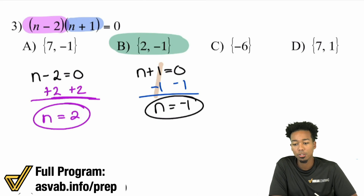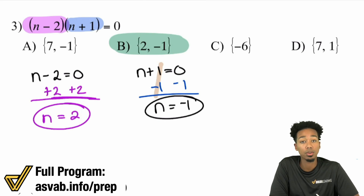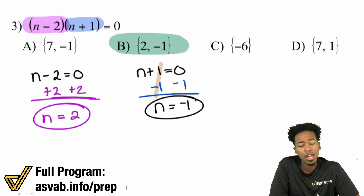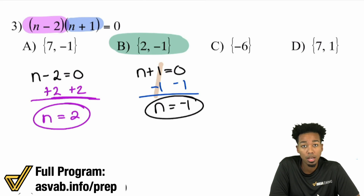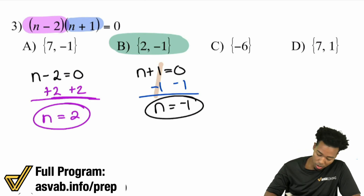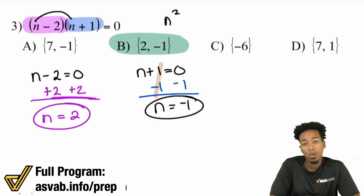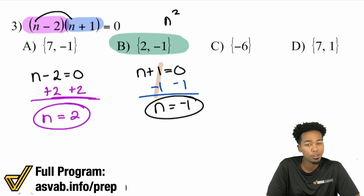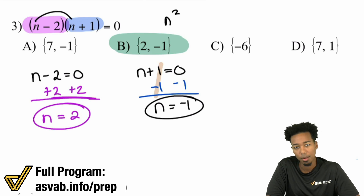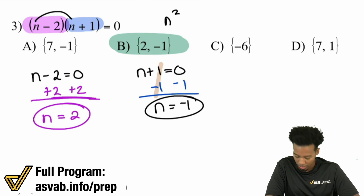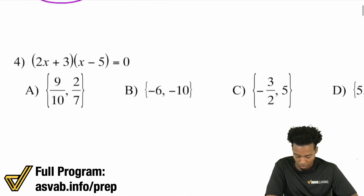You have to get used to having equations where it's possible to have more than one answer. And the thing is, you know that there's more than one answer because if you were to distribute this, you would have n squared. That power of two — that exponent of two — means that you're going to have two answers, two solutions to the problem.